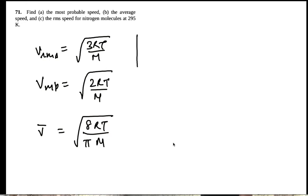Alright, so let's calculate for nitrogen molecules. The molar mass for nitrogen molecule is 28 grams per mole.